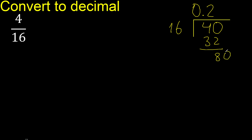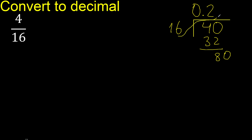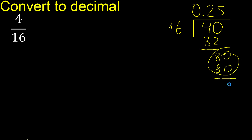Always complete with 0. The point is already placed. Now with 80: 16 multiplied by what number? 16 multiplied by 5 is exactly 80. Subtract: remainder is 0. Therefore we are finished.